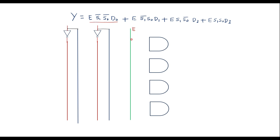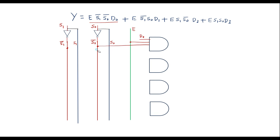For the first product term E·S1̄·S0̄·D0: one input of the AND gate is E, another is S1̄ (taken from the output of an inverter connected to S1), another is S0̄ (from an inverter connected to S0), and the fourth is D0. The output of this AND gate is E·S1̄·S0̄·D0.